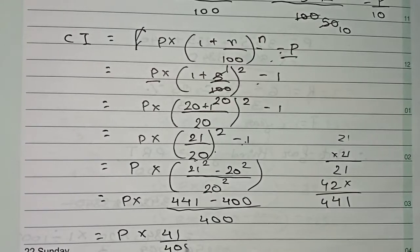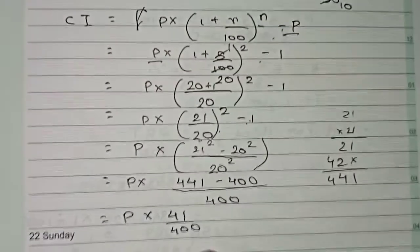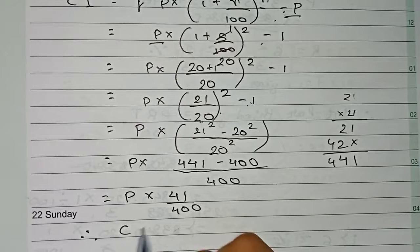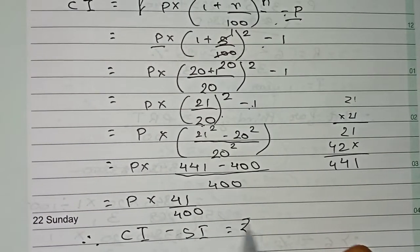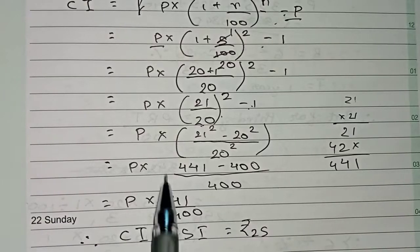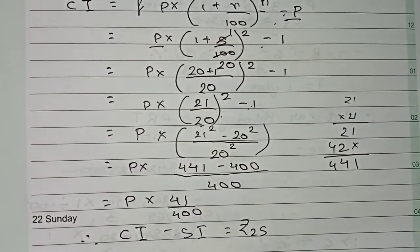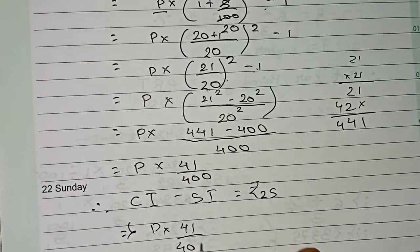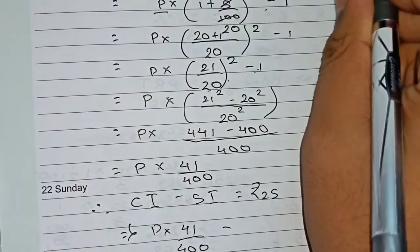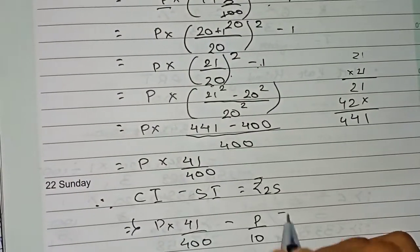Now in the question it is given that CI minus SI, or the difference, is given rupees 25. So therefore, if we write these two formulas: CI is P into 41 by 400, minus the SI that is 5 by 10, is equal to 25.